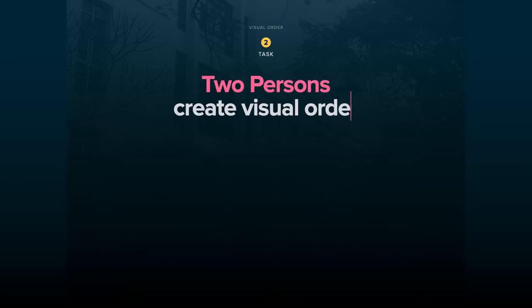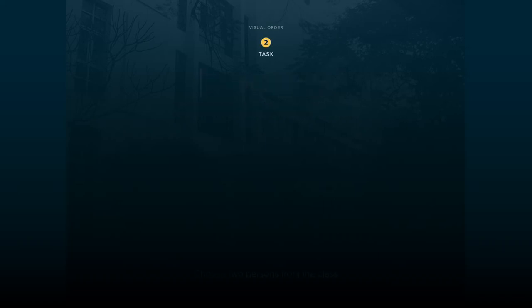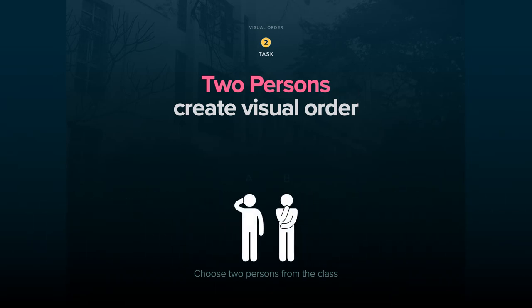In our journey, now it might be easy for you to understand the reason as to why we increase the number of persons in Task 2. In Task 2, shoot a picture of two persons in such a manner that person A is seen prior to person B — that is, person A should be seen first in visual order in comparison to B.